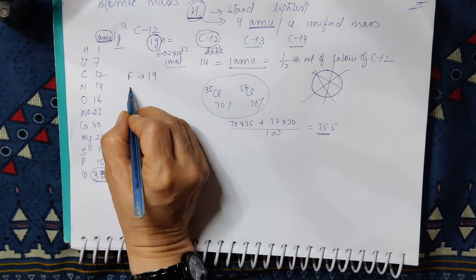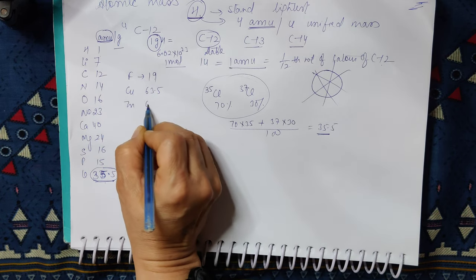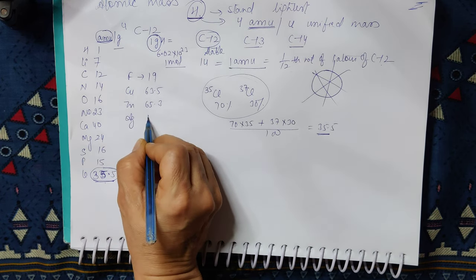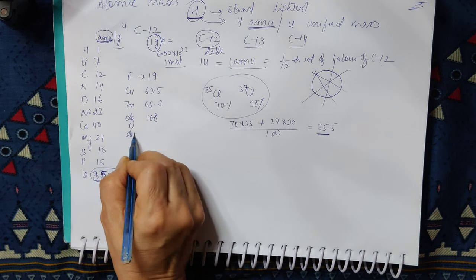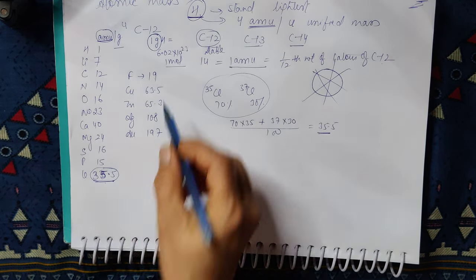Fluorine is 19, Copper is 63, Zinc is 65, Silver is 108, Gold is 197. If we missed something, we will see. Why did I write this? In your book, there is a question.